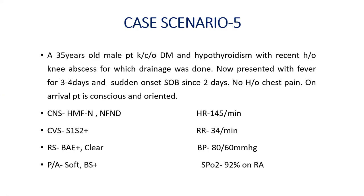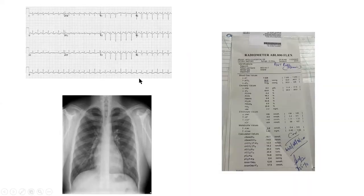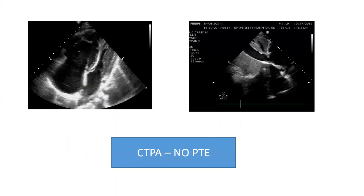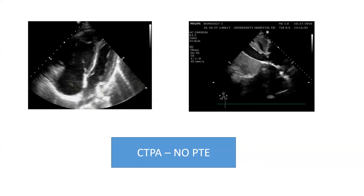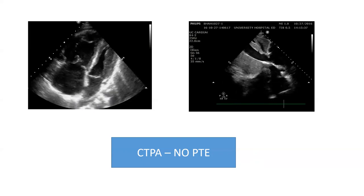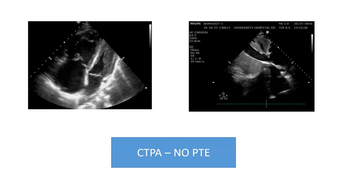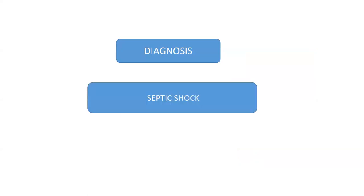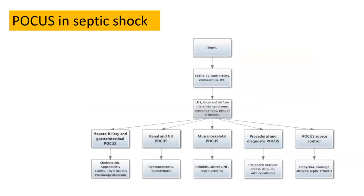Last case scenario: a middle-aged male, diabetic with hypothyroidism, who recently underwent knee abscess drainage, presents with fever and shortness of breath. He is tachycardic, hypotensive, and hypoxic — clinically you think septic shock. ECG shows sinus tachycardia with no major ST changes, X-ray is normal, but ABG is grossly abnormal with both respiratory and lactic acidosis, and he suffers a cardiac arrest. The echo shows the right heart is dilated and plethoric, but CTPA did not show pulmonary embolism. Sepsis can cause septic cardiomyopathy — treat the sepsis and maintain contractility.